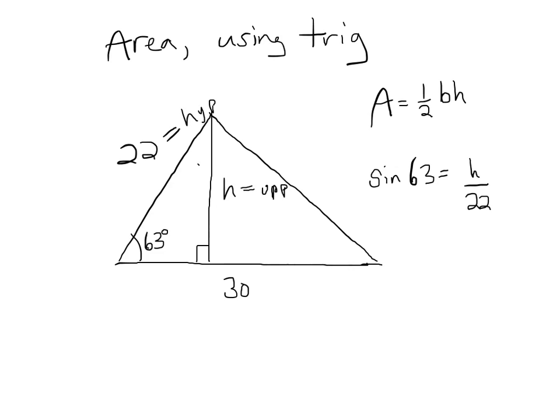Sine of 63 is H over 22. Okay? So if I want to solve for H before I even plug in anything, I can say that 22 sine of 63 equals H. Okay. Right? Right? And then B is already right here. It's 30. Okay? So the area then is 1 half times 30 times 22 sine of 63. Now, I can put all that into a calculator. Right? But let's try to write this in general.